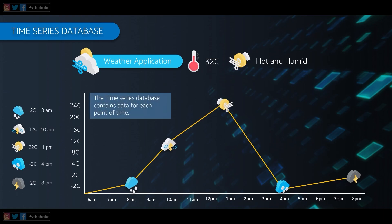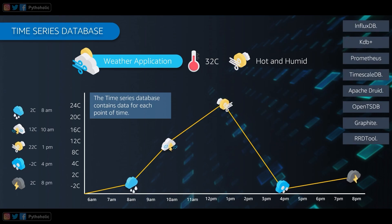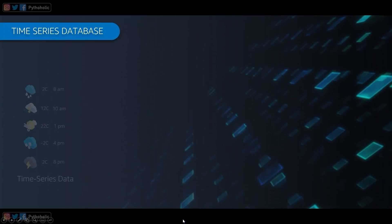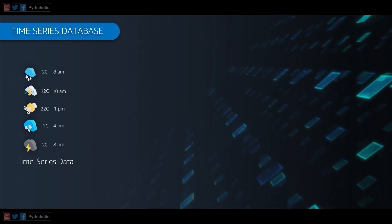A time series database contains data for each point of time. This is not a new concept — we already have many time series databases like InfluxDB, KDB+, Prometheus, and others. But we are here to discuss Amazon Timestream specifically.